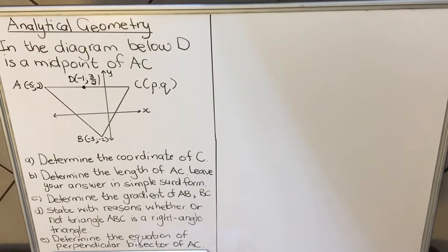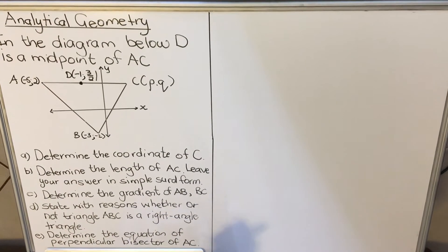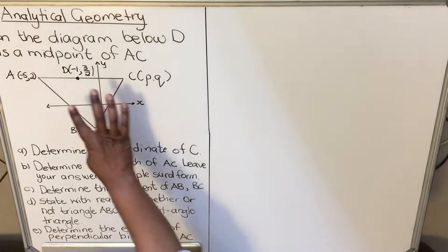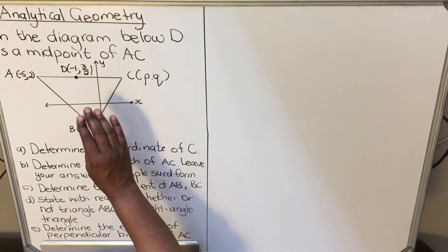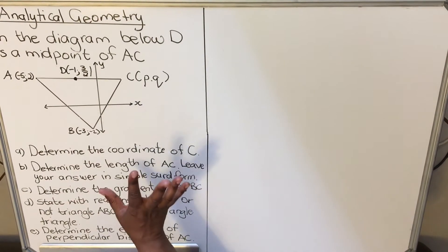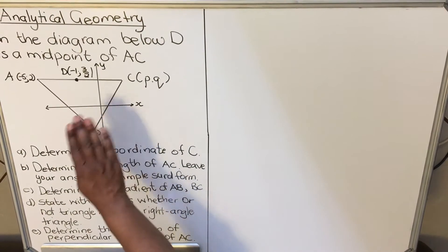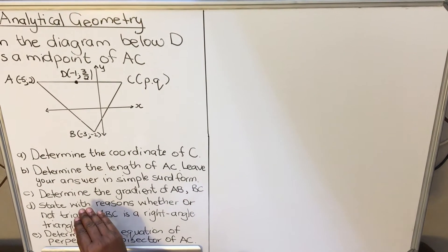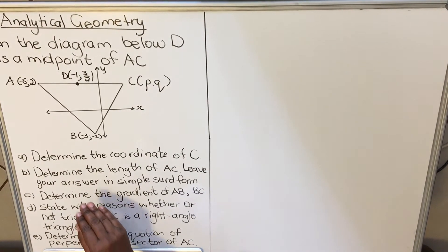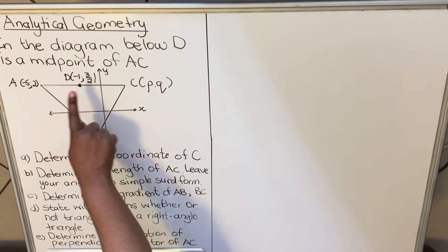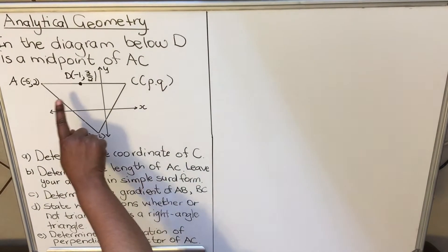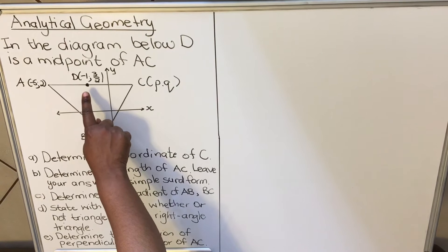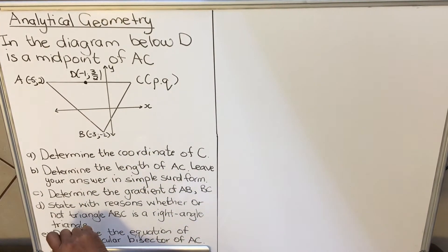Hello Grade 10s, this is a lesson on Analytical Geometry. Analytical Geometry means shapes, but analytical geometry deals with shapes on the Cartesian plane. We're going to look at an example and find different things. In the diagram below, D is a midpoint. A midpoint is a point in the middle of a particular line.